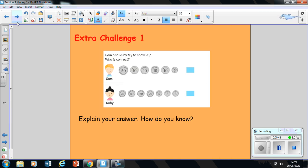You've got some extra challenges this week. It says Sam and Ruby are trying to show 95 pence. You've got to check who is correct and explain your answer. How do you know who is correct? Is Sam correct or is Ruby correct?